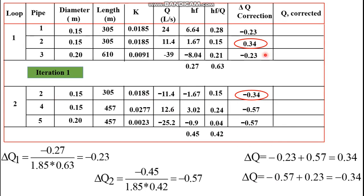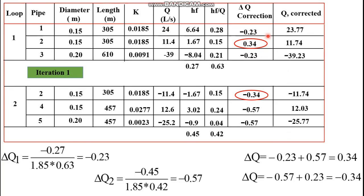Once we have the correction, the next step is to calculate the corrected discharge. The corrected discharge is simply the old discharge plus the correction, giving the adjusted discharge. Notice that the summation of head loss still does not approximate zero, so we need to perform another iteration.